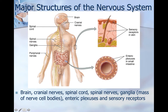The major structures of the nervous system include the brain and all the cranial nerves, your spinal cord, your spinal nerves, the ganglia, the peripheral nerves, then you have sensory receptors in the skin, and the enteric plexus in the small intestines.